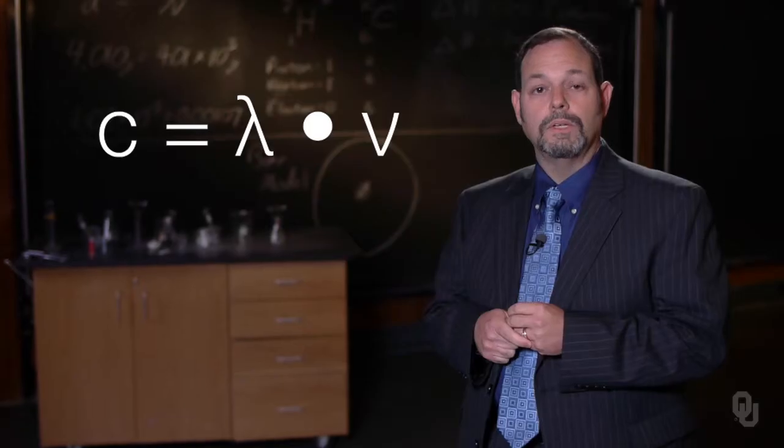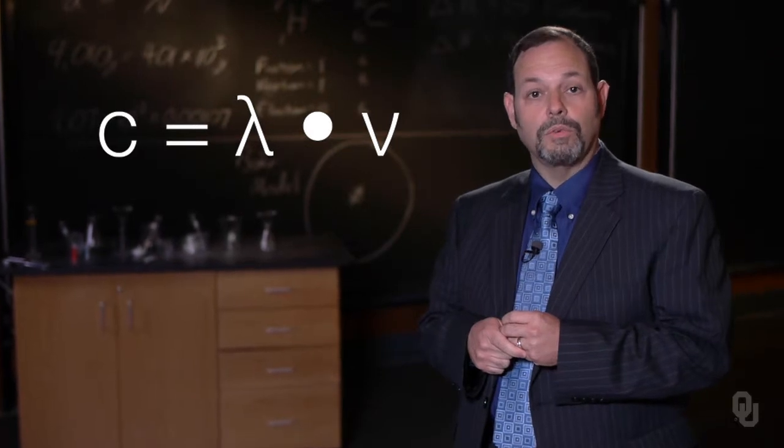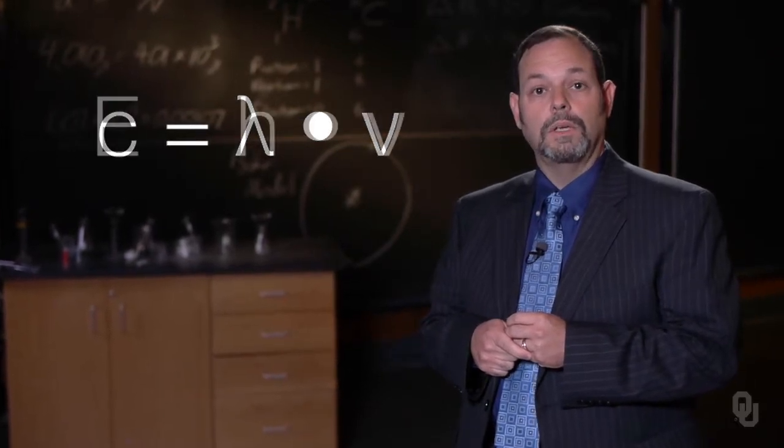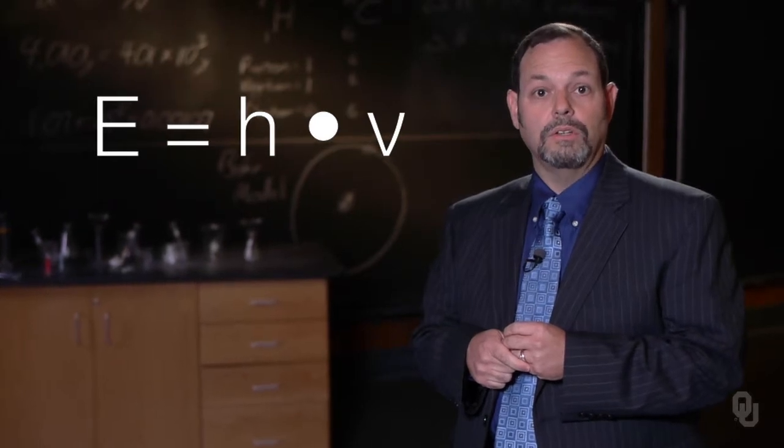When we consider these components, we can also think about two other factors. The speed of light, C, which is 3.00 times 10 to the 8th meters per second. And energy. C is equal to wavelength times the frequency. Energy is equal to Planck's constant times the frequency.